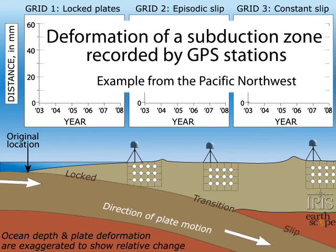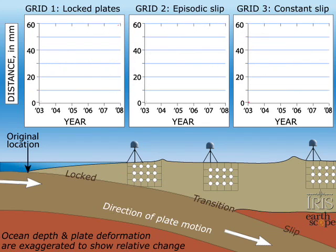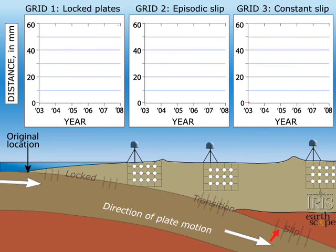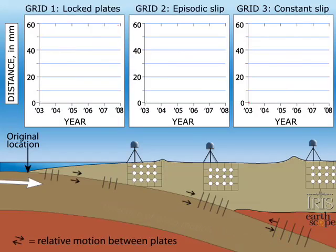In this animation, the three grids portray plate interaction and deformation in three zones of a subduction region, which include the lock zone at the leading edge of the overlying plate, a transitional zone that locks for approximately 14 months at a time, then slips back a little before continuing its push inland, and the zone far inland from the locked portion of the plates that sees little to no deformation.